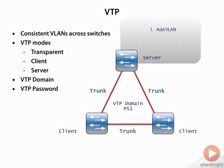First, we add a VLAN on the server — just like we discussed, we go into config T, then VLAN 10, and give it a name. Once we've added that VLAN, the server is going to increment the revision number of the VTP database. Once it increments that revision number, it sends a VTP update out of its trunk ports.